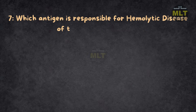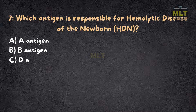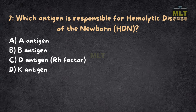Question 7: Which antigen is responsible for hemolytic disease of the newborn (HDN)? Option A: A antigen. Option B: B antigen. Option C: D antigen (RH factor). Option D: K antigen. Correct answer: C, D antigen (RH factor).